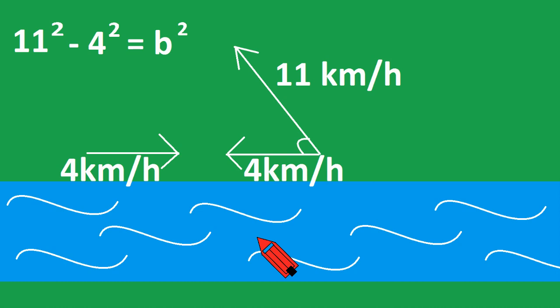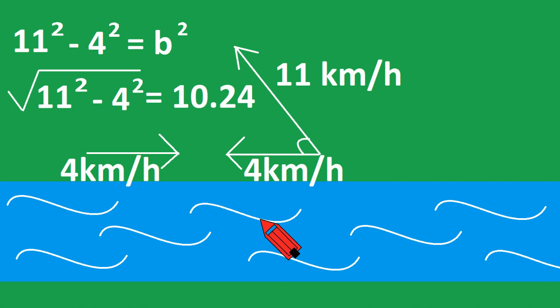So 11 squared minus 4 squared equals b squared. If we take the square root of 11 squared minus 4 squared, we get 10.24 kilometers an hour for the speed across the river.